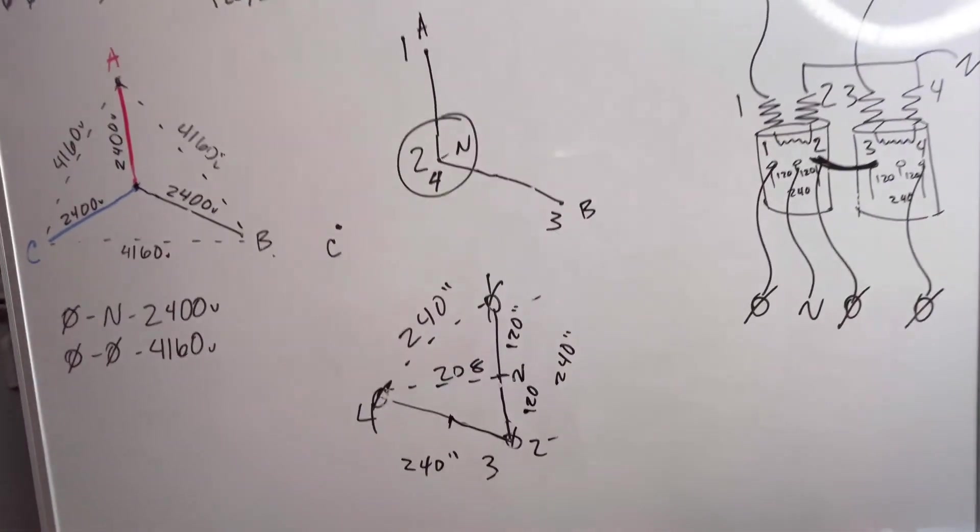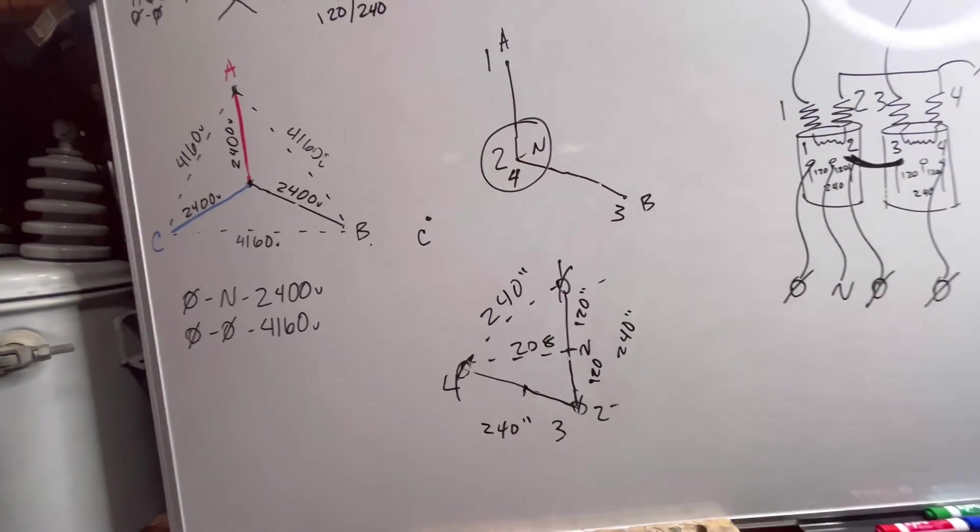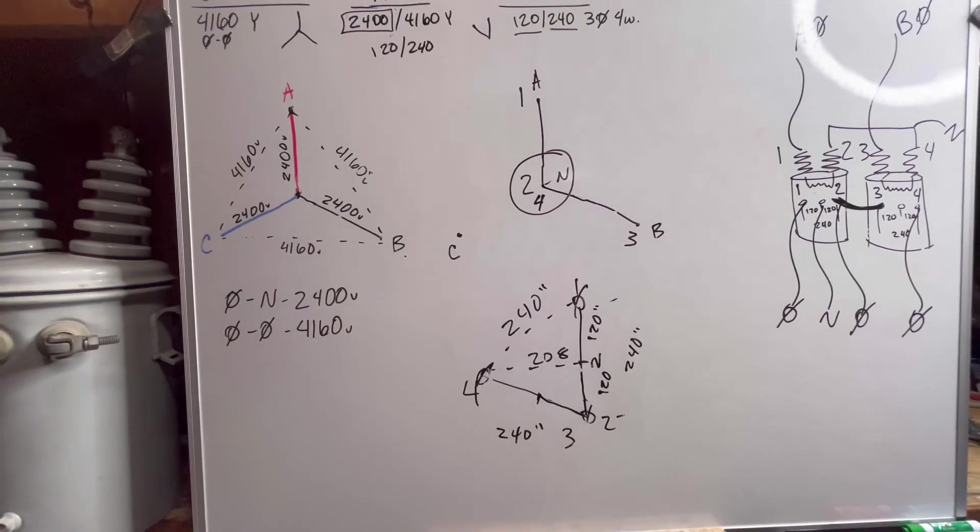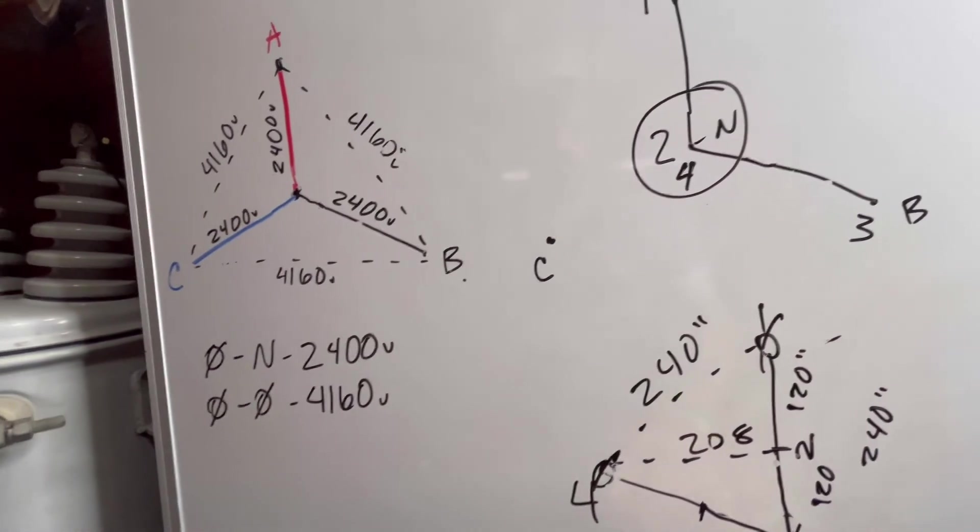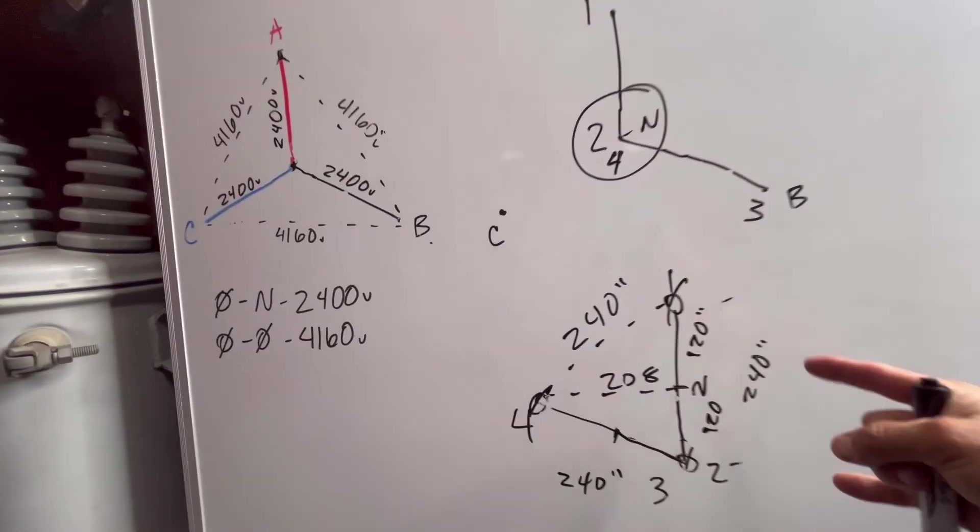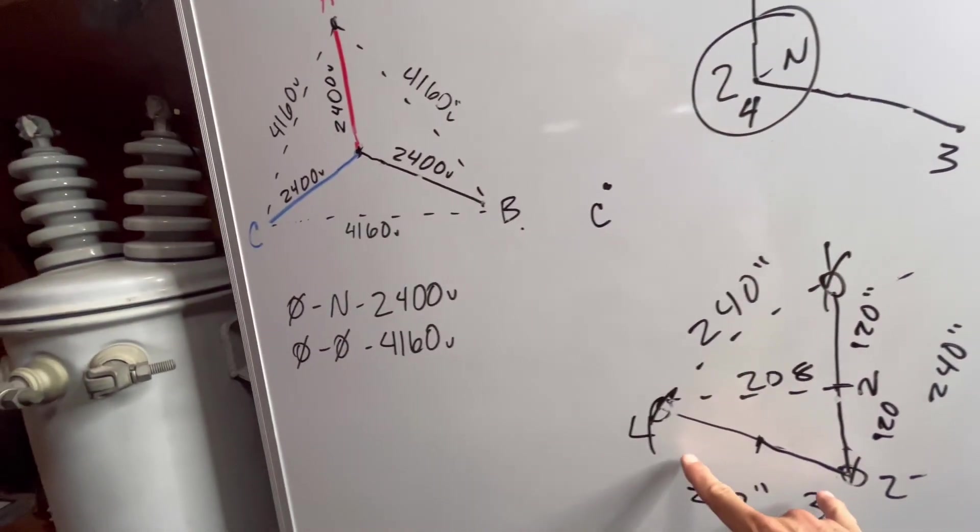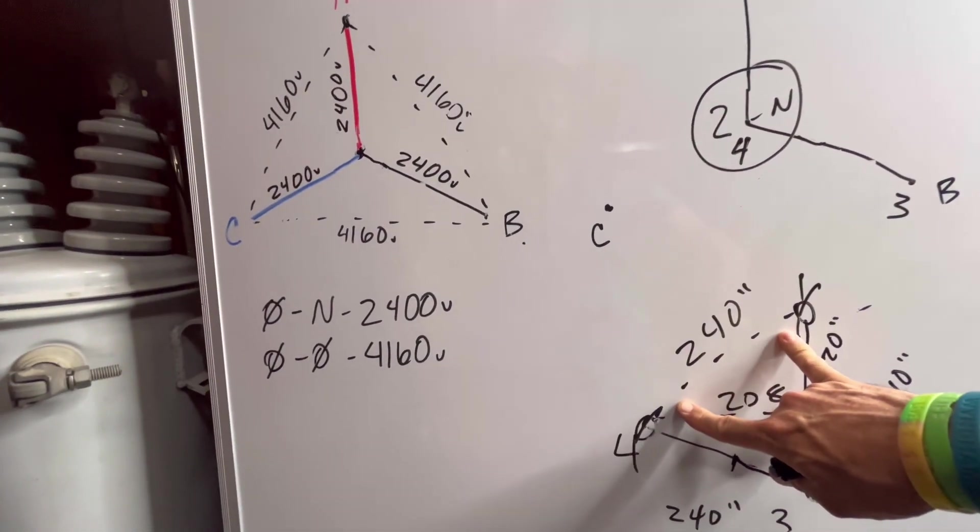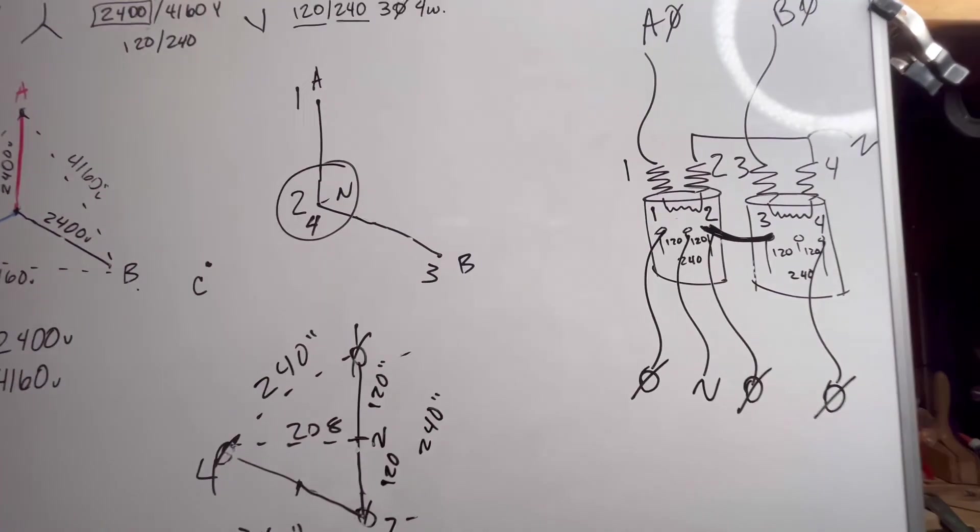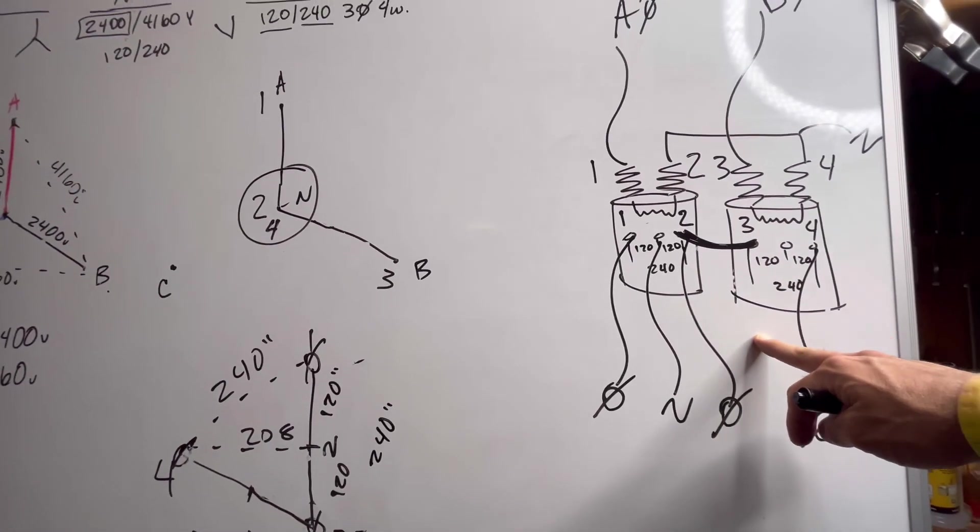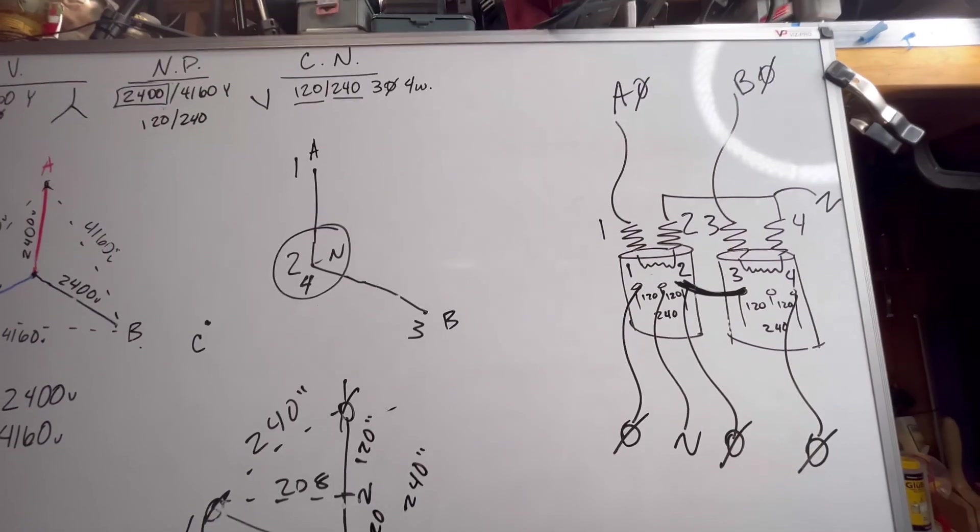So vectoring is a really neat tool that we can use to teach people about why we hook up a delta the way that we hook it up. It shows us where the voltages come from in distance and angles. So the only thing left to do is to go outside and hook it up and heat her up. Let's go.